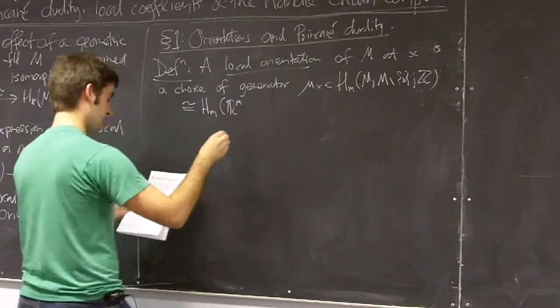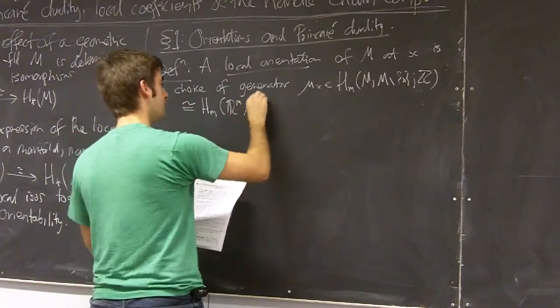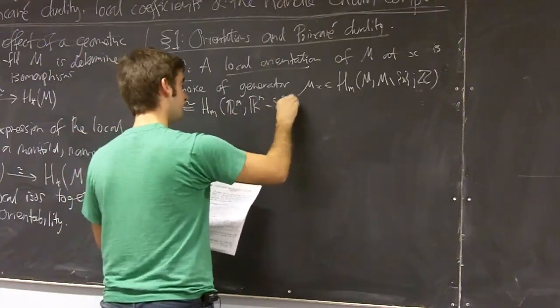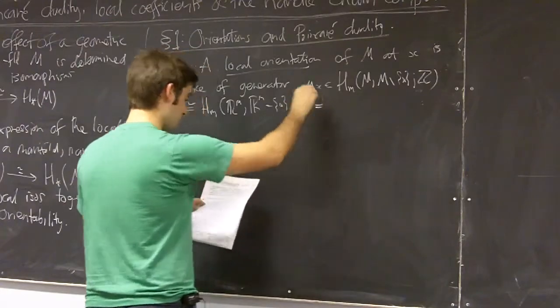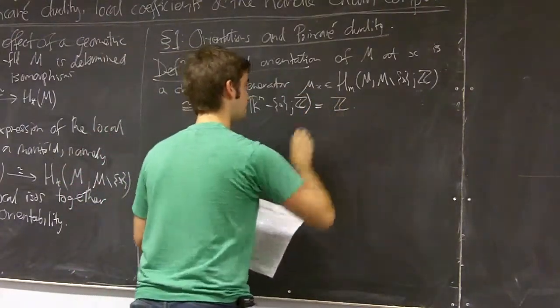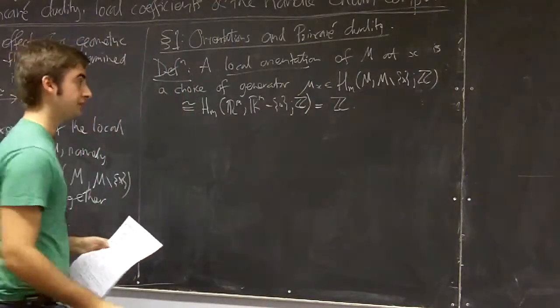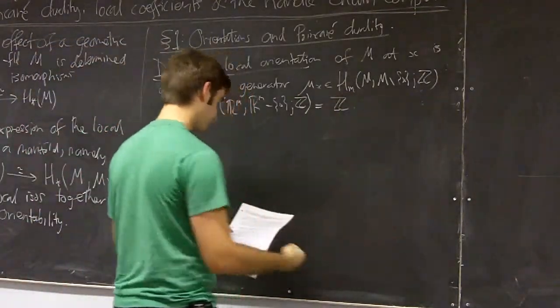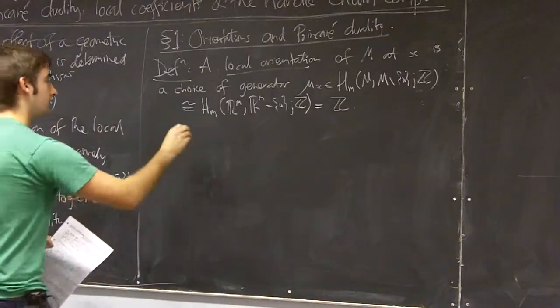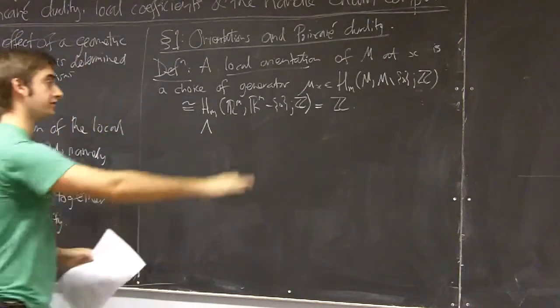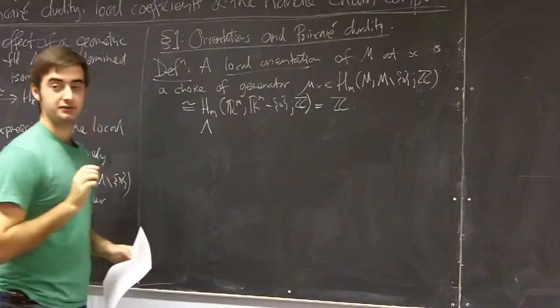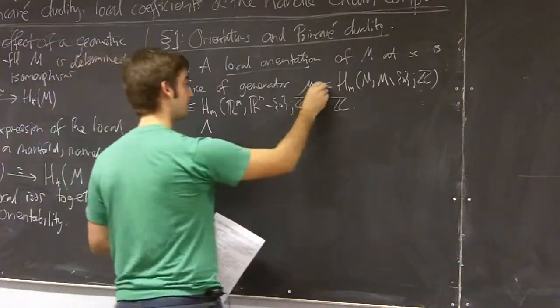Because M's a manifold, we know this is by excision the same as homology of ℝ^m, rel ℝ^m minus the origin. And we know this is just a copy of the integers. So this generator is just plus or minus one in this homology group. And this is a local orientation. We've got one of these generators for each point of our manifold.